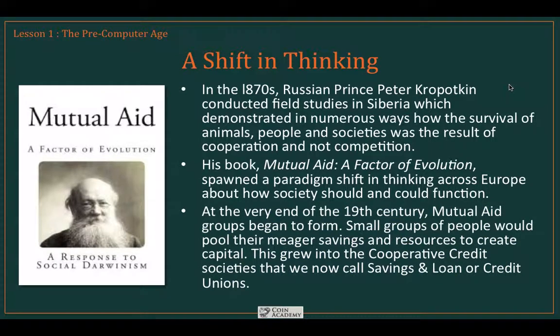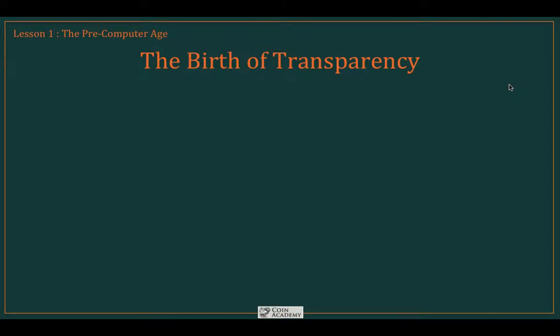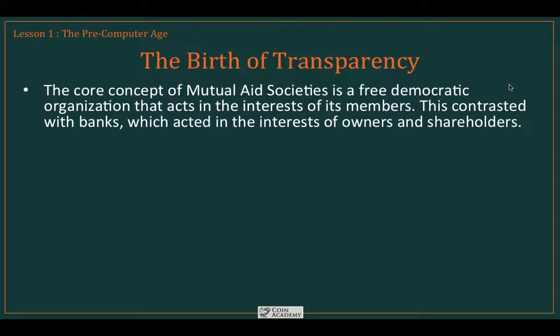By the very end of the 19th century, groups known as mutual aid societies began to form. These were small groups of people who would pool their meager savings and resources to create capital that would benefit the group as a whole. This eventually led to cooperative credit societies that we now call savings and loans, or credit unions. The core concept of these mutual aid societies was a free democratic organization that acted in the interest of the members, which contrasted directly with the existing banking infrastructure, which acted largely in the interests of their owners and shareholders.